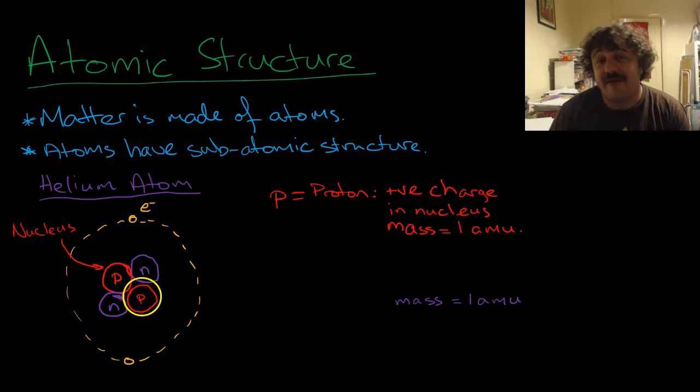Basically, what we have is we have a proton. This area here is called the nucleus, and these are the electron shells. So this is the nucleus, and in the nucleus we have a proton, which has a positive charge, is in the nucleus, and it is a mass of one atomic mass unit. Now, an AMU, or atomic mass unit, is a unit of matter, which is essentially one neutron's mass.